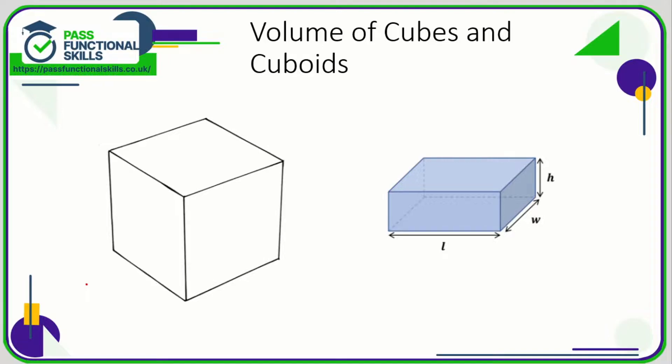Let's take a look at the volume of various shapes. So first of all, the volume of a cube. Now in a question they might only give you one dimension for a cube. They might say that it's got a side length of 16 centimeters. Well that's fine because all the three dimensions are the same.